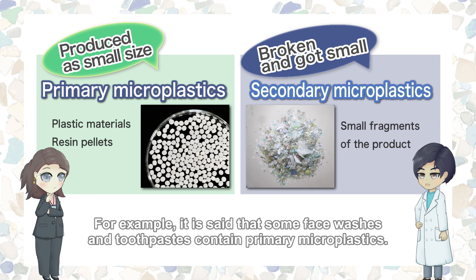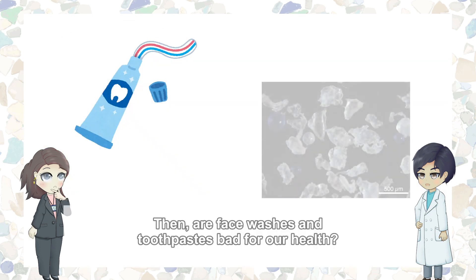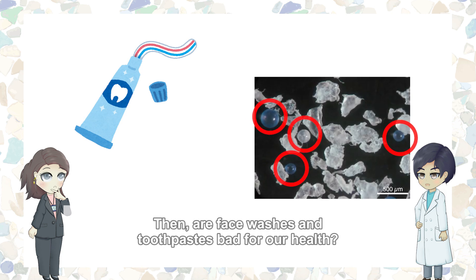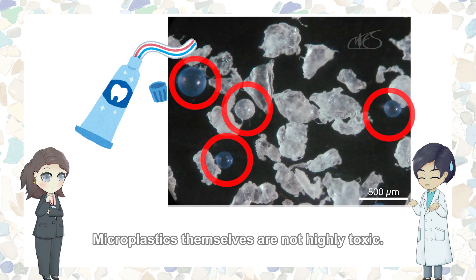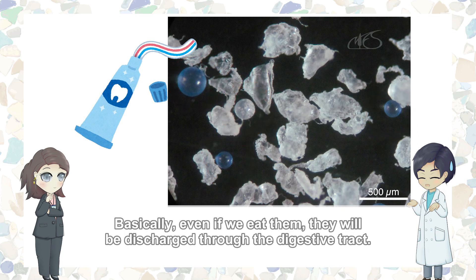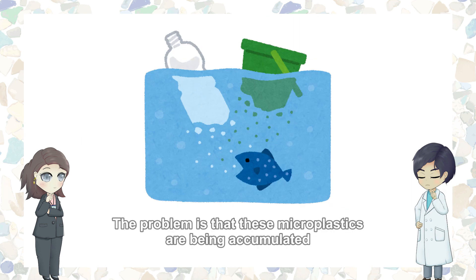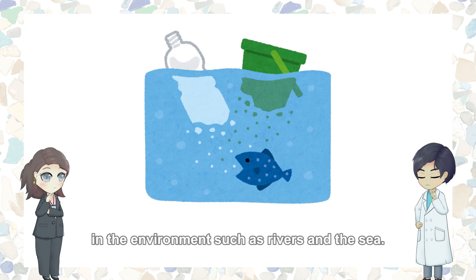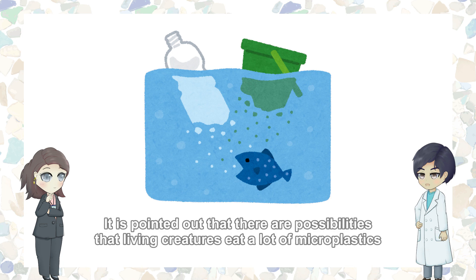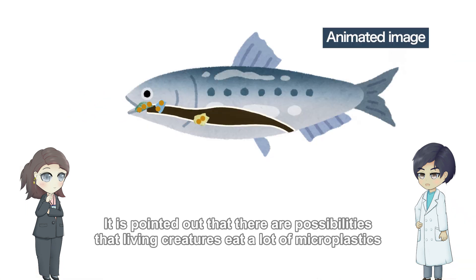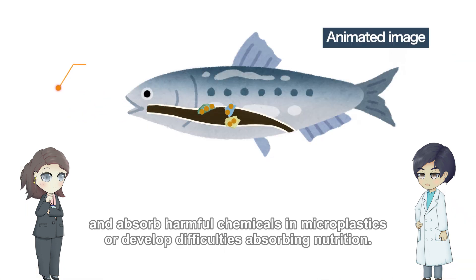For example, it is said that some face washes and toothpastes contain primary microplastics. Then, are face washes and toothpastes bad for our health? Microplastics themselves are not highly toxic. Basically, even if we eat them, they will be discharged through the digestive tract. The problem is that these microplastics are being accumulated in the environment such as rivers and the sea. It is pointed out that there are possibilities that living creatures eat a lot of microplastics and absorb harmful chemicals in microplastics or develop difficulties absorbing nutrition.